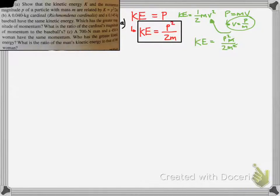You notice the square, so you get p² and m². When you simplify it, you get the equation KE = p²/2m. So we just verified the equation that they want us to prove.